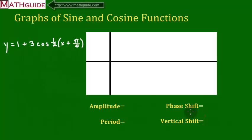This is MathGuide.com. My name is Mark Karadimos. We are going to take a look now at a cosine curve that has four characteristics. Let's run through them.